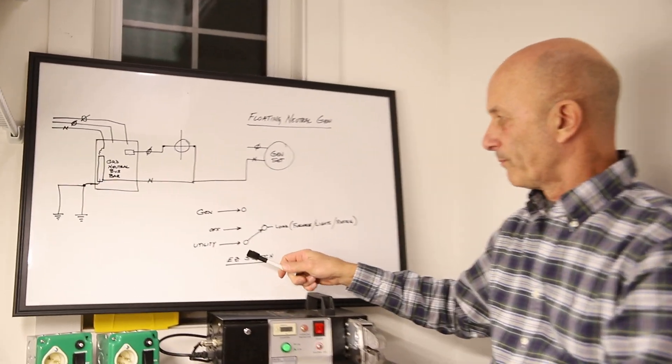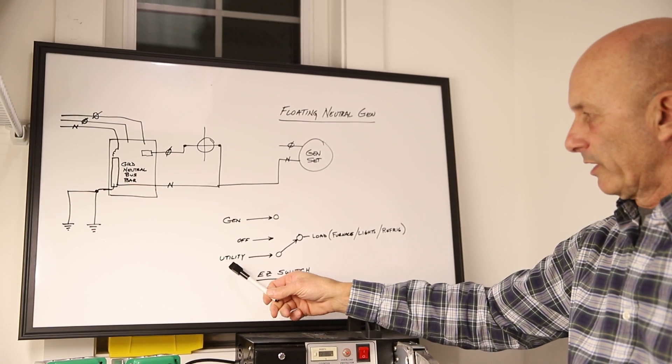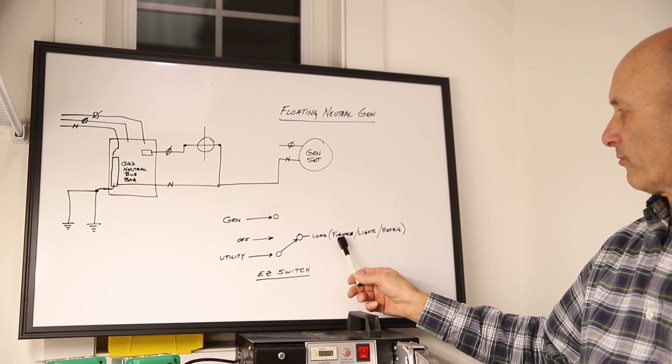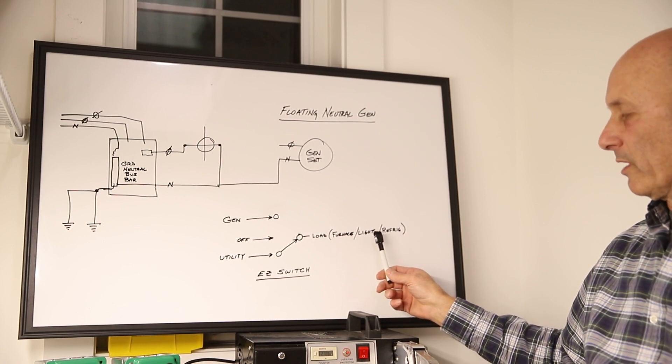So first let's look at our switch. You have power come in from the utility, goes through our switch and goes to your load, a furnace, lights, a refrigerator, whatever the case may be.